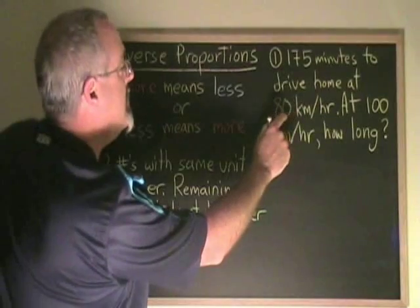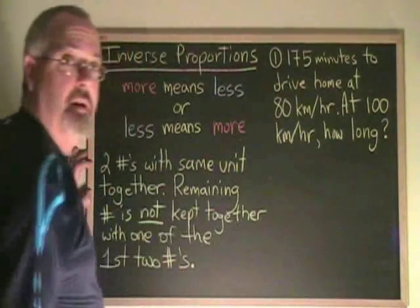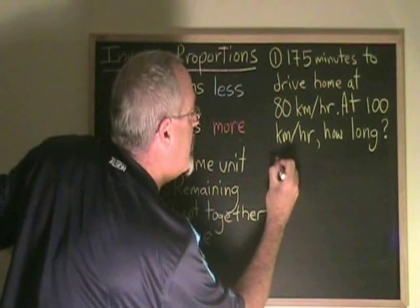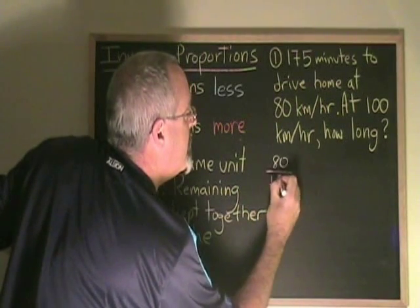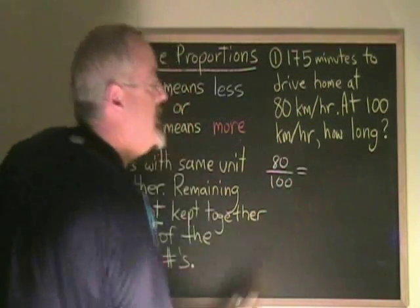I see 80 kilometers per hour and 100 kilometers per hour have the same unit, so I'm going to put them together with the smaller number on top, on the left side of my equal sign.